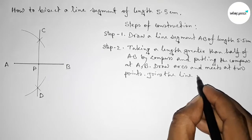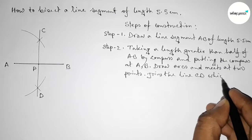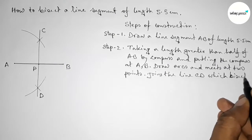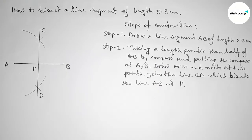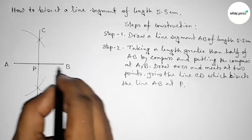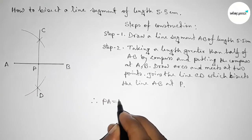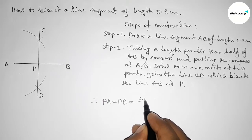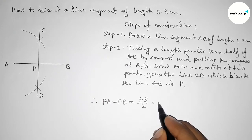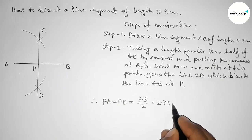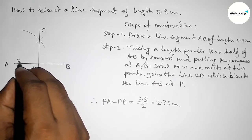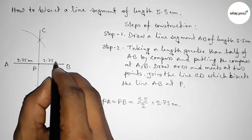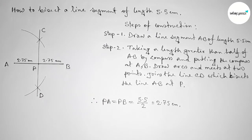Join the line CD which bisects the line AB. Therefore PA and PB are equal: PA equals PB equals 5.5 divided by 2, which is 2.75 centimeters. So this half is 2.75 centimeters and the other half is also 2.75 centimeters.